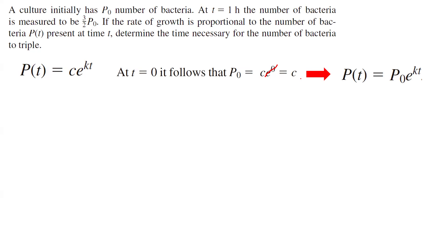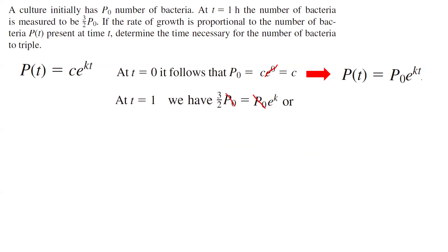We know that at t equals one, after one hour, the population is measured to be three halves times p sub zero. Substituting, three halves p sub zero equals p sub zero times e to the power k times one. Canceling p sub zero from both sides, you end up with e to the power k equals three halves.